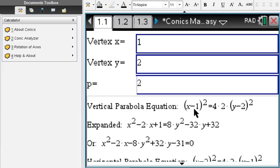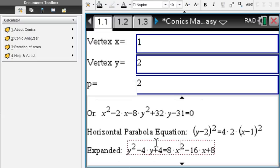Everything is of course done step-by-step for you. (x-1)² = 4 times 2, which is the p-value, (y-2)². And then you expand both sides and bring all the terms to one side, and that will give you your quadratic equation.